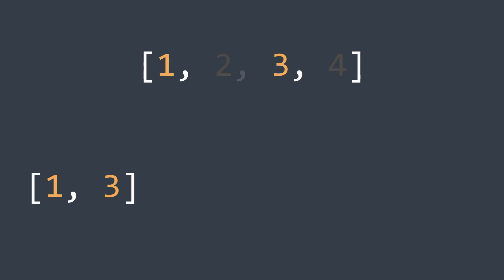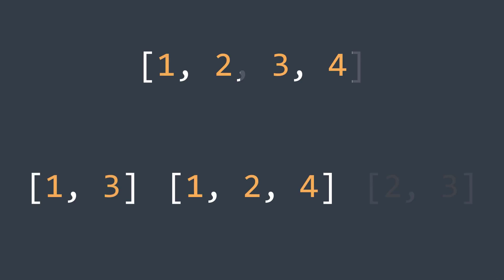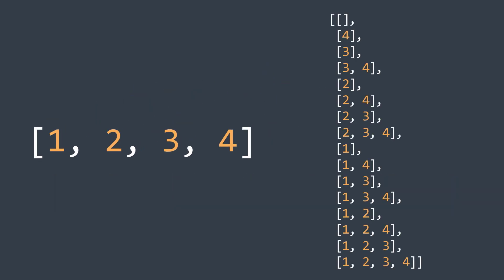A subset of an array is a possible combination of its elements. In this video, we will see three ways to generate all the possible subsets of an array — it's called the power set. A subset doesn't need to contain a particular element from the array.